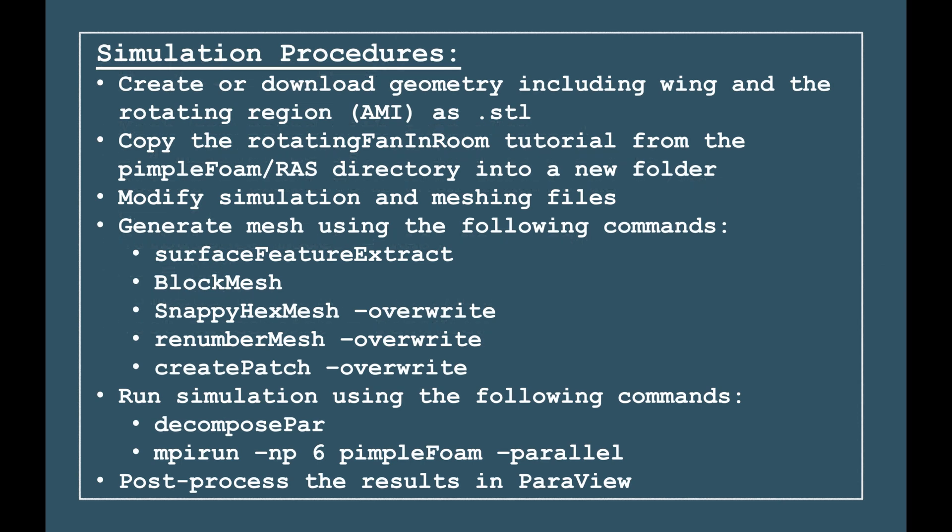These are the basic simulation procedures and commands I used. I am not running through them step by step because these are similar enough to tutorials I have done in the past. Besides specifying different boundaries and boundary conditions, they are identical to those found for the rotating fan in room tutorial. The main area of focus for this video will be the post-processing of the results in ParaView to get the lift and drag values.